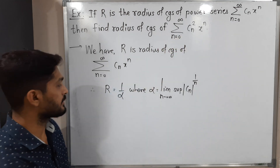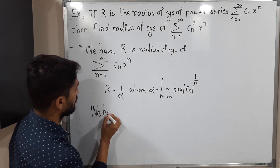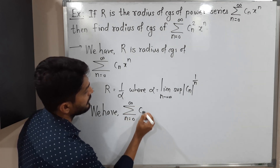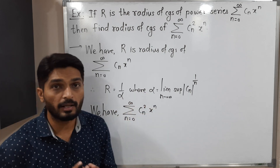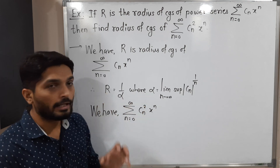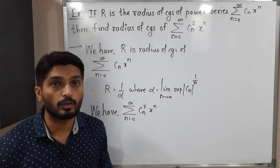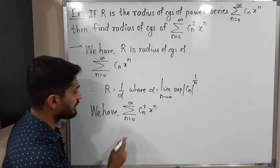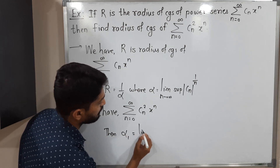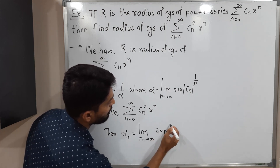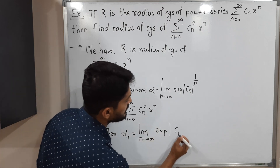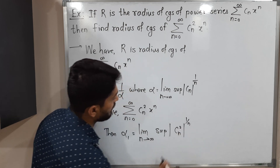The given power series is summation from n = 0 to infinity of cₙ² · xⁿ. Using the same method to find its radius of convergence, we first calculate α₁ using the supremum formula, where the coefficient of xⁿ is cₙ².